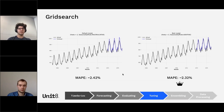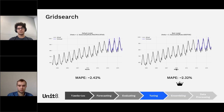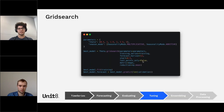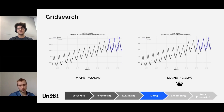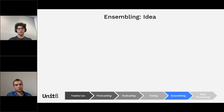Looking at our theta example: on the left, theta with theta=2 and multiplicative seasonality — the default model we created earlier. On the right, the result of grid search. We grid searched on the training series, and we can see it was beneficial: when we look at the validation set and the forecast we made, the best model found by grid search achieves better MAPE results. So: time series, forecasting, evaluating, and tuning. Now Francesco will present the ensemble model.